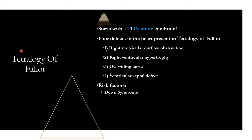There are a few risk factors you need to know for Tetralogy of Fallot. Down syndrome is one of the more common ones. DiGeorge syndrome, which is chromosome 22 deletion, is another. Also Alagille syndrome — a genetic disorder affecting multiple organs, particularly the liver causing bile buildup — is also associated with Tetralogy of Fallot. Remember these because they may be present in a vignette to help you reach the diagnosis.